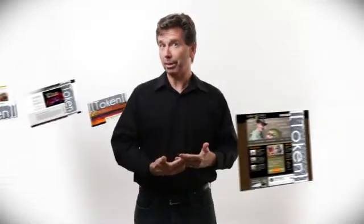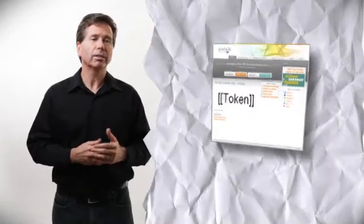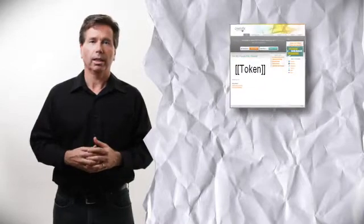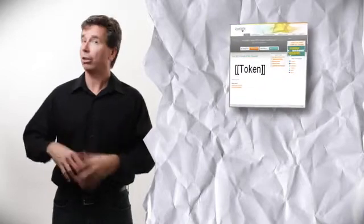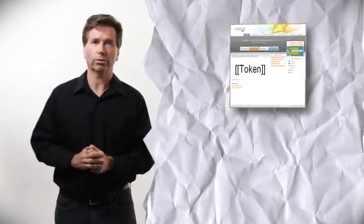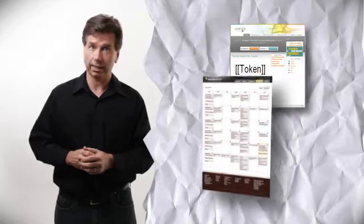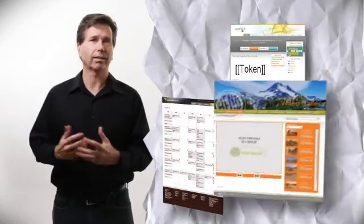When you start typing a token, it automatically pops up our TokenSense window that has a list of all the tokens that have been created and that are available to that website. This is a very, very powerful feature because it doesn't just work for content — it also works for those other back-end resources: interactive calendars, video player, slideshow, any piece of functionality.